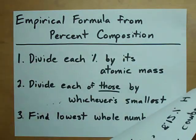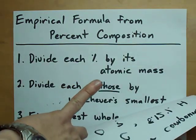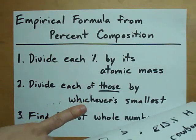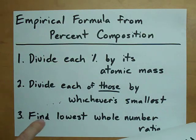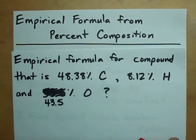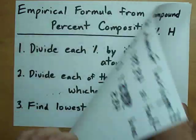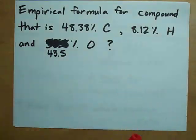All you need to do is divide each percent that you're given by the atomic mass of the element, divide each of those values by whichever one's smallest, and then adjust those so that they're a low whole number ratio. All right, step one. Divide each percent by its atomic mass. Let's do this.